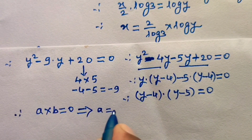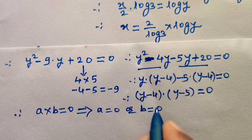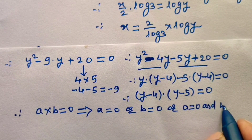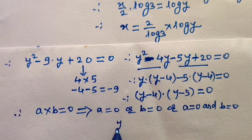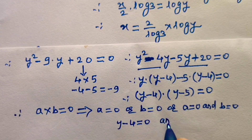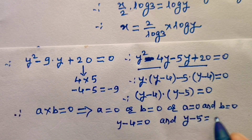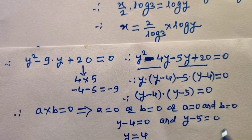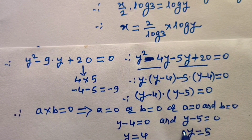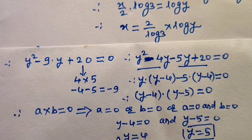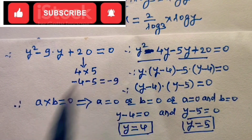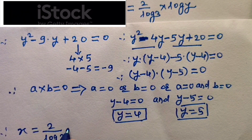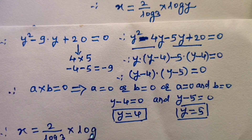Taking the bracket (y minus 4) common from both terms gives (y minus 4)(y minus 5) equals 0. Since a times b equals 0 implies either a equals 0 or b equals 0 or both, we get y minus 4 equals 0, so y equals 4, and y minus 5 equals 0, so y equals 5. There are two values of y. From the equation x equals 2 upon log 3 times logarithm of y.